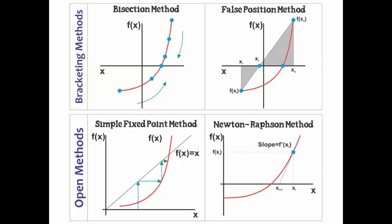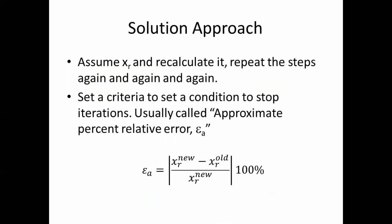The other category is what's called the open methods. Open methods only require one assumption—one point—and then based on this point you assume another point and so on until you reach the solution. So you have to assume just one point; it doesn't need two points as the previous one. In this case, we will have two methods: the simple fixed-point method and the Newton-Raphson method. Of course, each one of them has personal concerns, and we're going to discuss each one of them in detail in the next two videos.